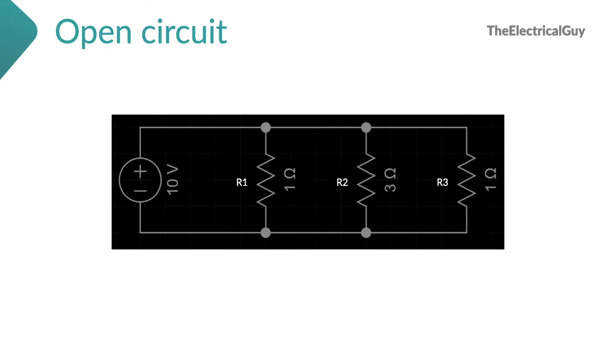Now, in case of parallel circuit, if the open circuit take place here at R3, then the total circuit current decreases because one load in parallel circuit is eliminated. Please note, this is only true if the open circuit happens in any of the branches.